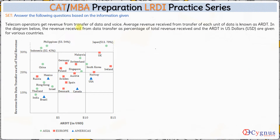Hello everyone. In this set, we are given data of certain telecom operators. Telecom operators get revenue from transfer of data and voice. Average revenue received from the transfer of each unit of data is known as ARDT. This ARDT is specifically the revenue per unit of data — this is not about voice, this is only for data.